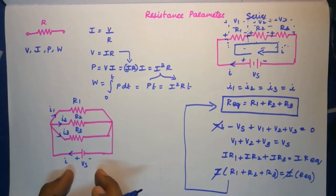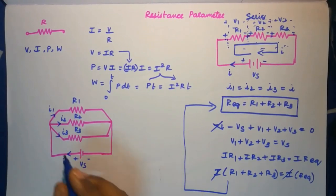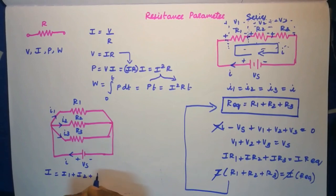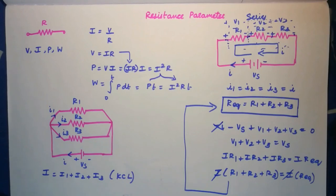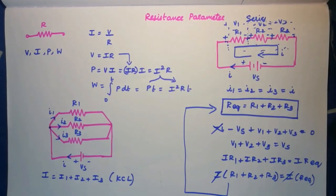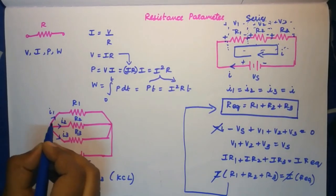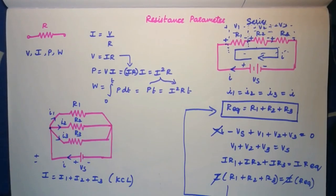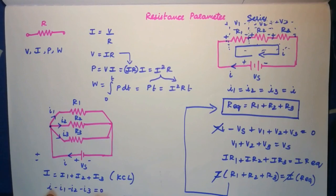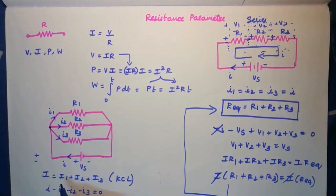We know that voltage is the same in parallel circuits, while current is the same in series circuits. Applying KCL — Kirchhoff's Current Law, which states that the algebraic sum of currents at a node is zero — we write: I − I1 − I2 − I3 = 0, giving us I = I1 + I2 + I3.